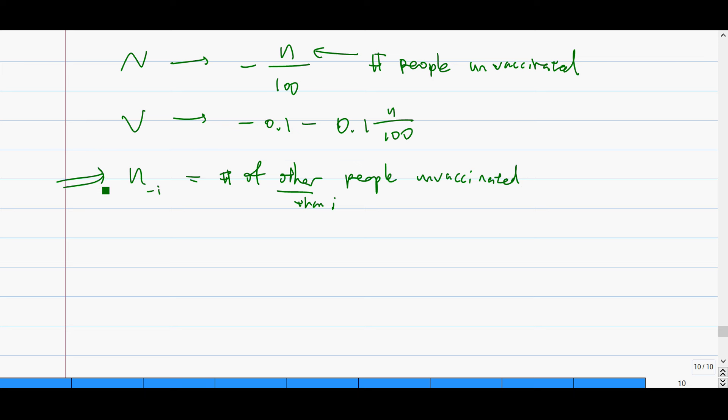So that's a very important summary statistic. To solve this type of N player game, that's always the way. You always try to find a summary statistic that summarizes the action of the other players. And usually, it is the number of other people who choose a particular action. So here it's the number of people who choose the action N.